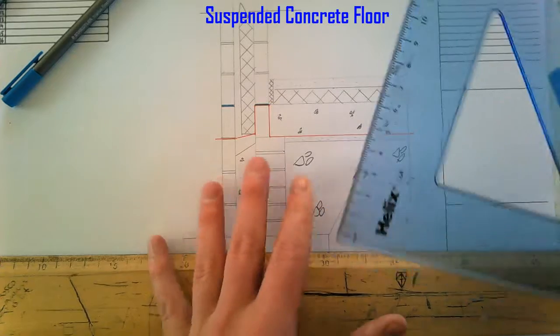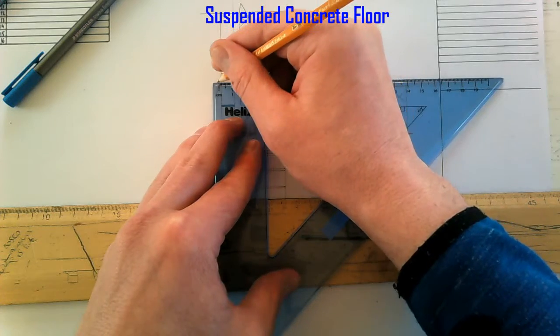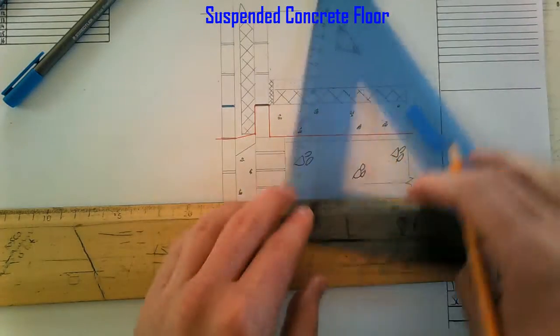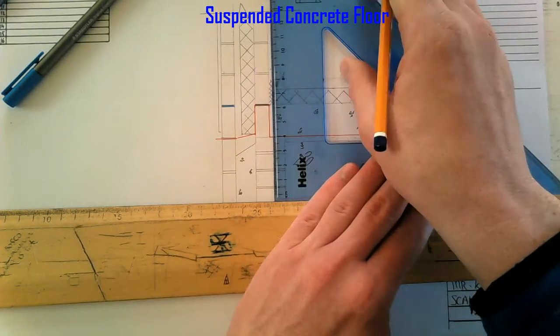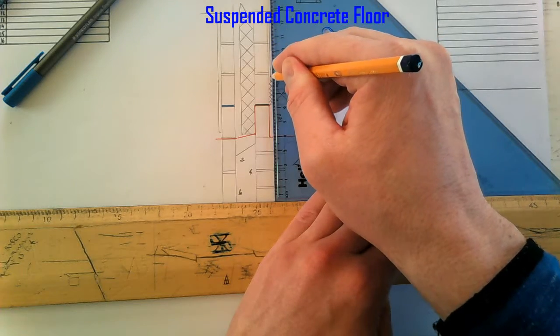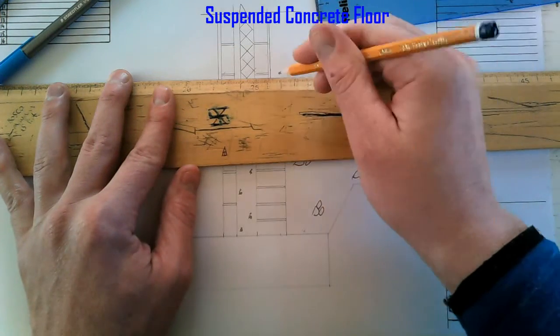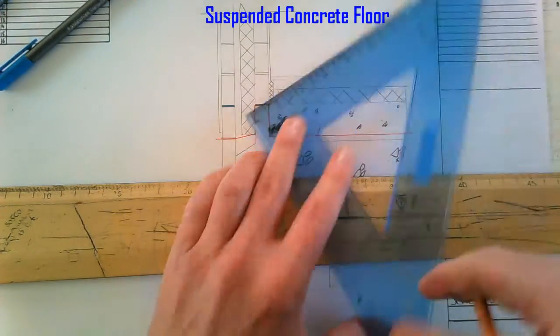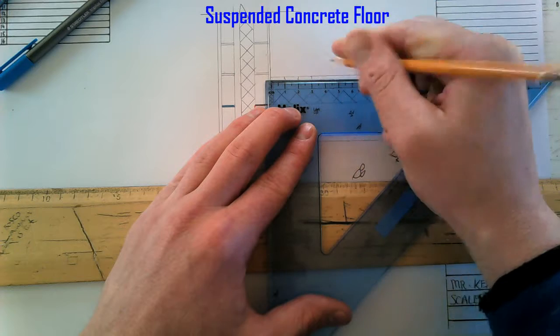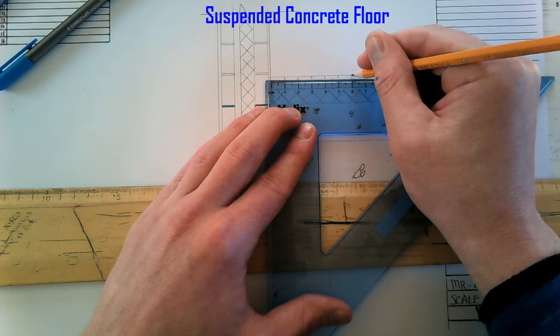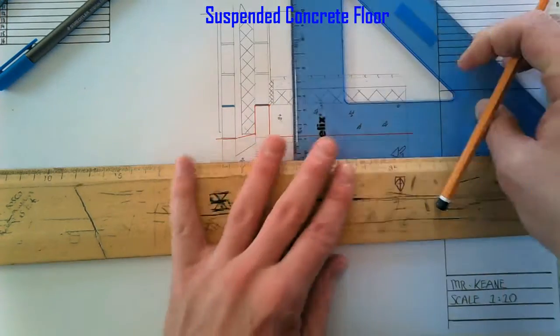So 100mm insulation, I'm going to put my internal render 12mm, external 18mm. Tongue and groove flooring, boards, and skirting board.